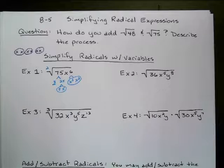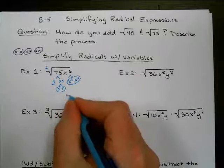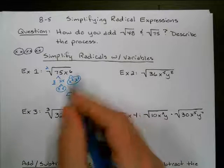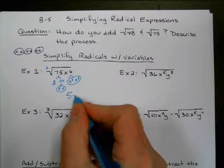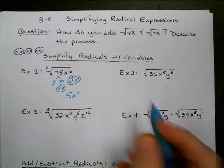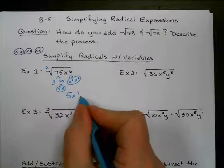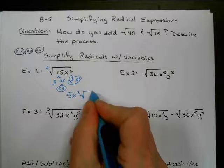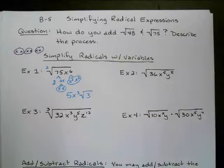All right, so what have we taken outside? I took a 5 outside. And I've taken an x to the 3rd outside. What did not make it outside? This 3. So this would be the square root of 3. And now we've simplified.